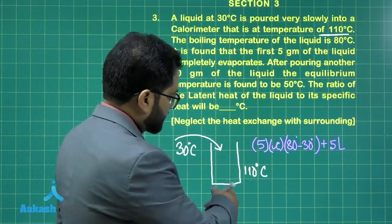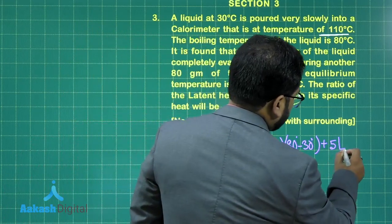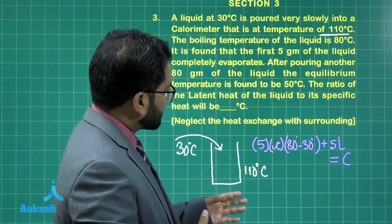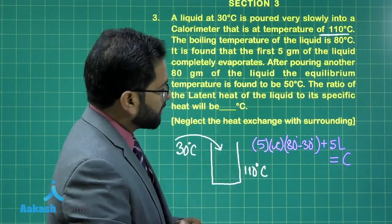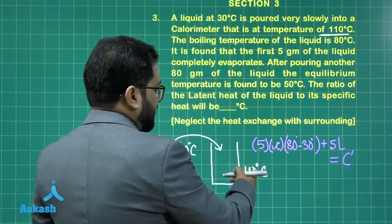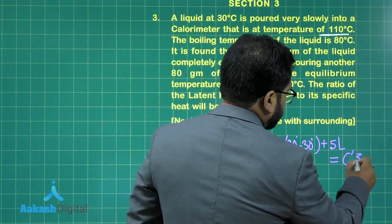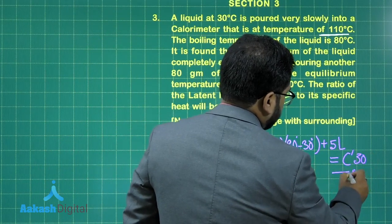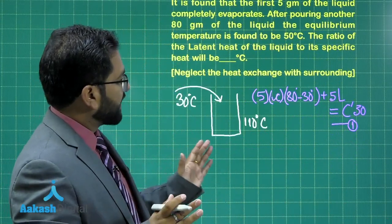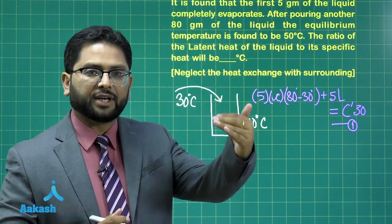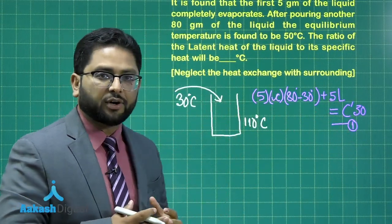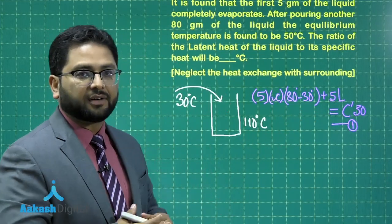And if you talk about the heat lost, of course, this calorimeter is going to lose the heat. So that is equal to capital C, the heat capacity of the calorimeter, or just to avoid confusion you may call it C dash, and 110 to 80. So the fall in temperature is going to be 30. Let me call that as equation number one. So first equation satisfies that the liquid from 30 has gone to 80 and then it has evaporated. And on this side, the calorimeter has fallen by a temperature of 30 degrees.